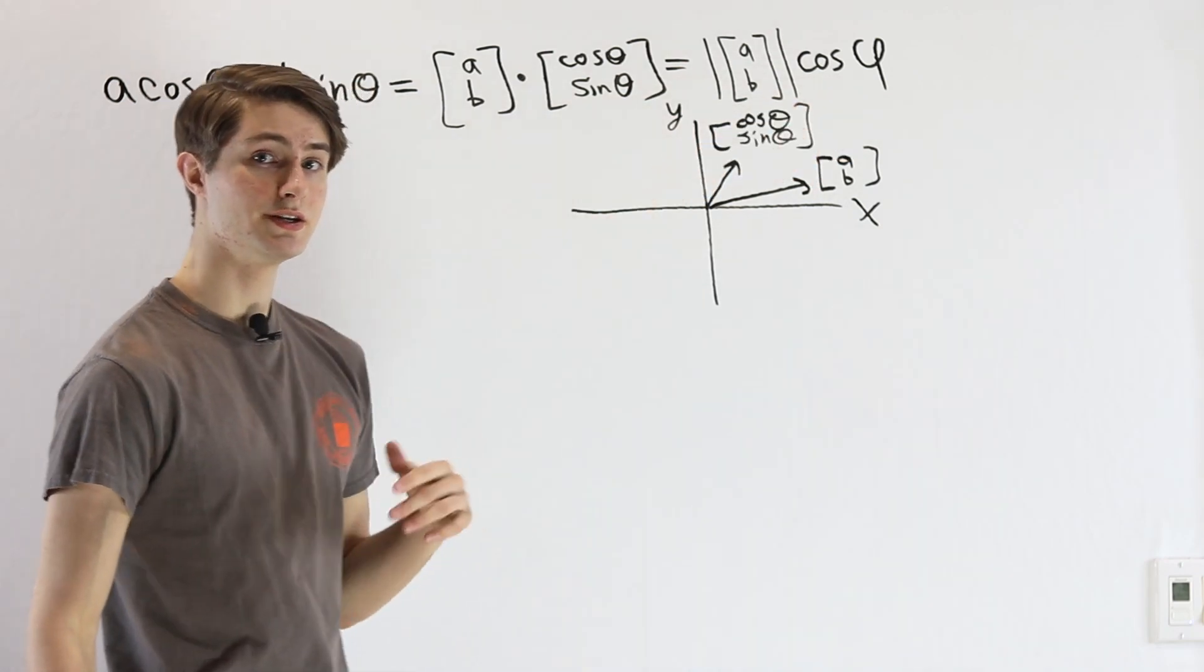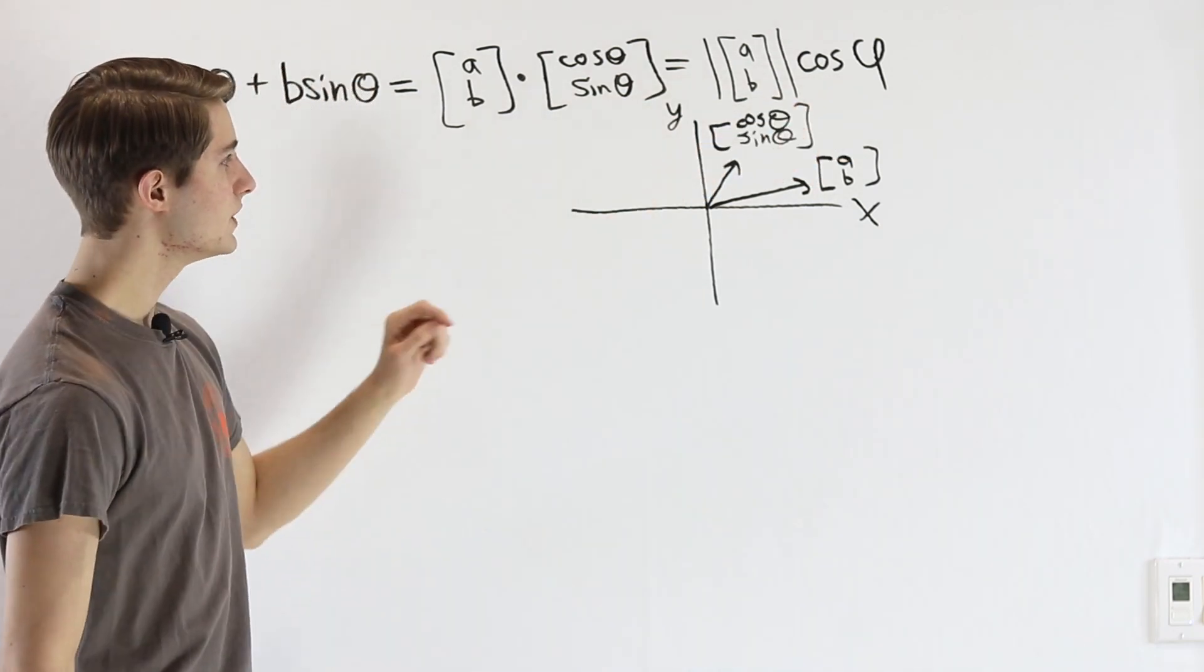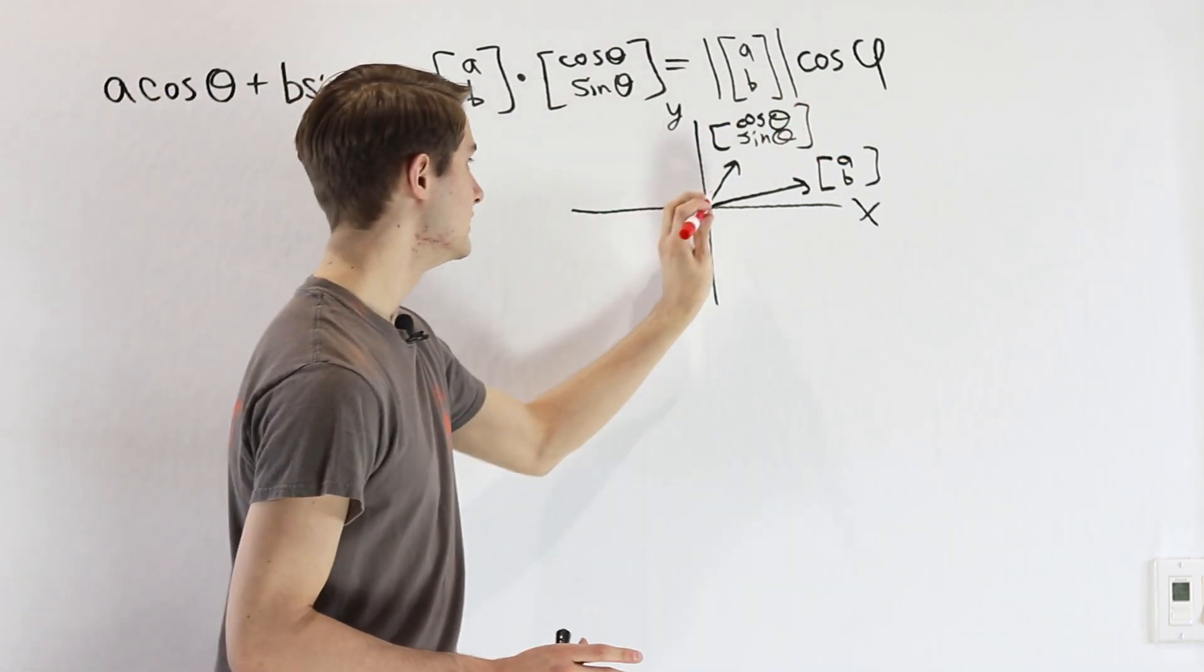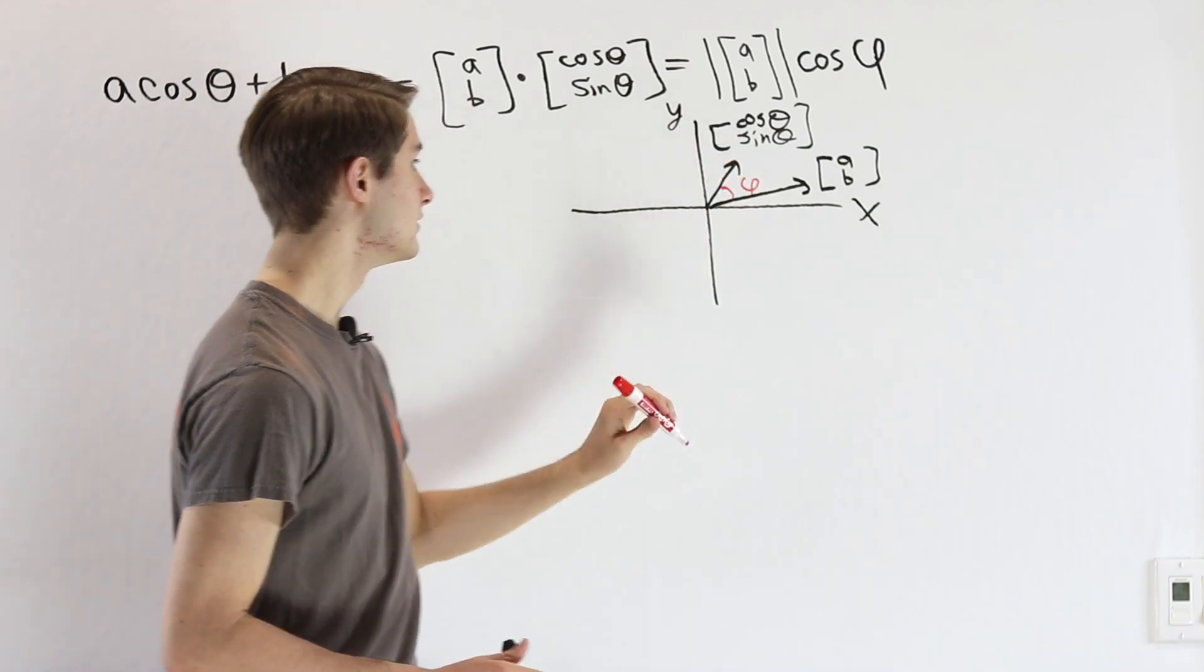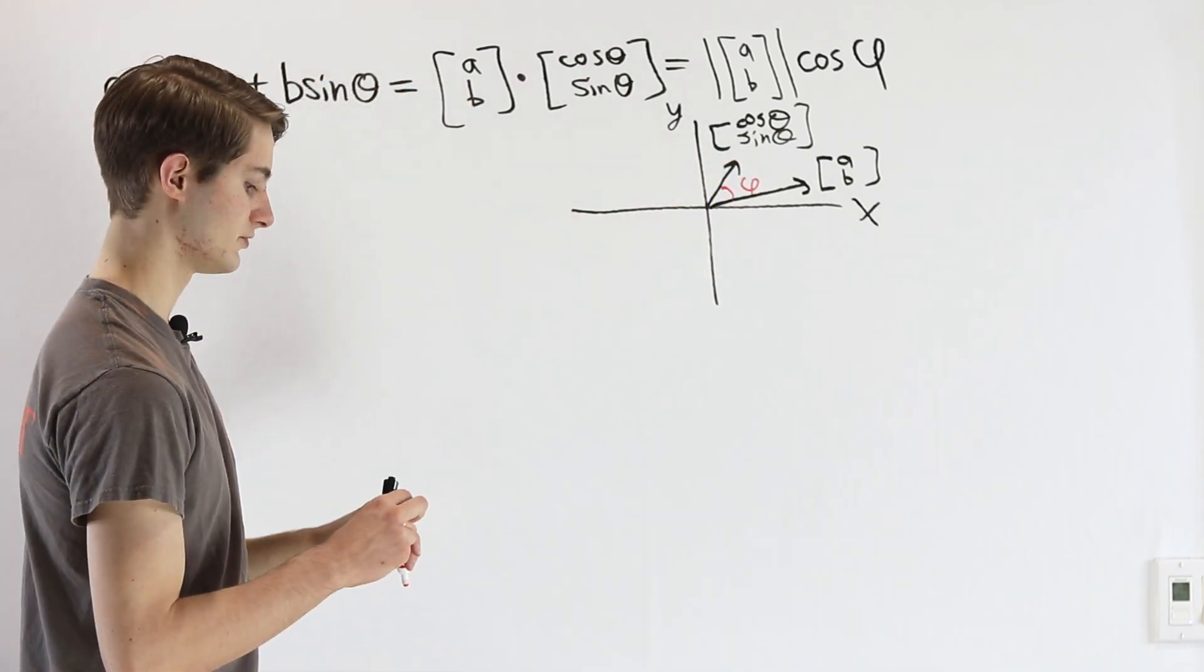This angle φ here, in the context of a dot product, is asking what is the angle between these two vectors. So the angle in here is what we're looking for.